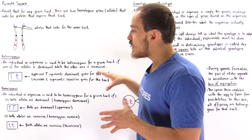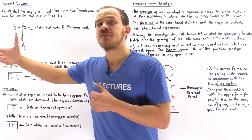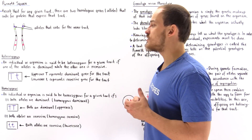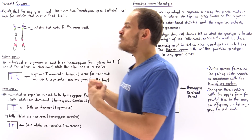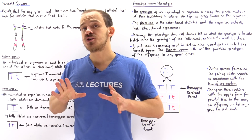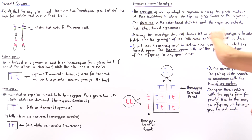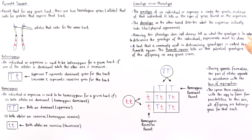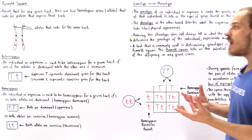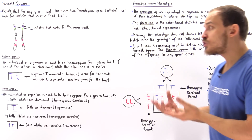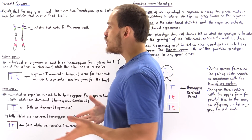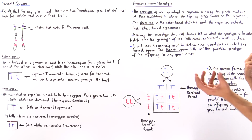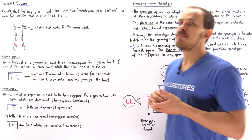Knowing the genotype tells us the phenotype, but is the opposite true? Can we know the genotype if we know the phenotype? The answer is not always. Knowing the phenotype does not always tell us what the genotype is. To determine the genotype, we actually have to conduct experiments, and usually the tool we use is a Punnett square.